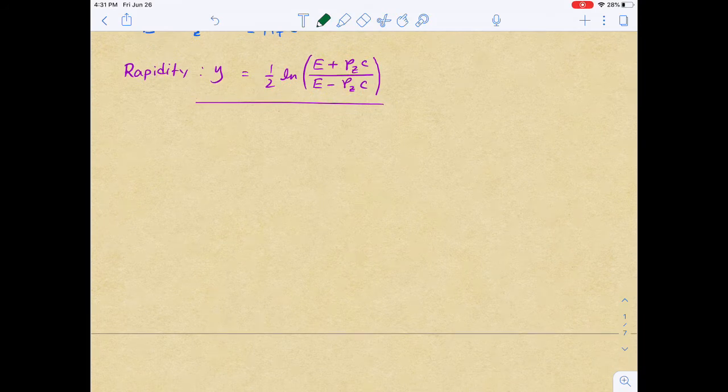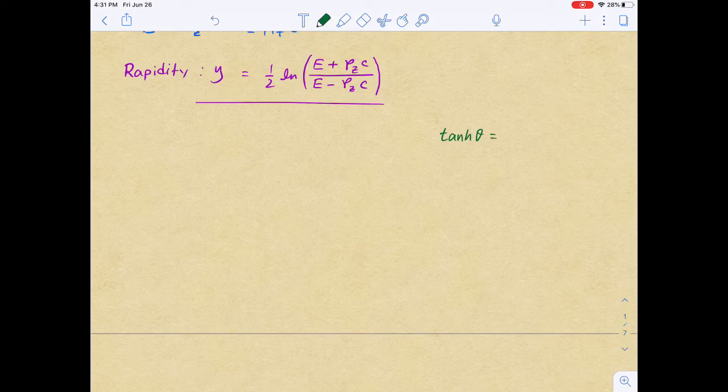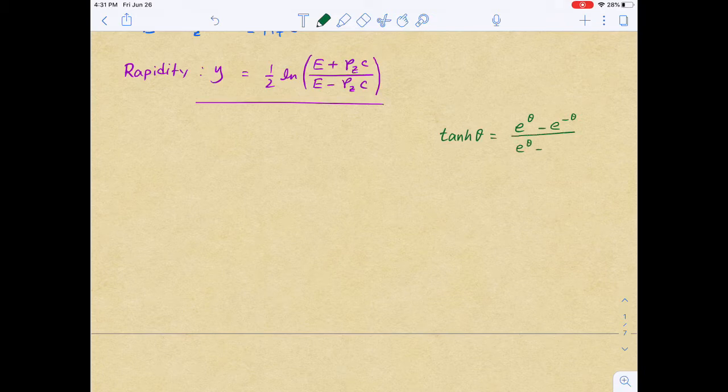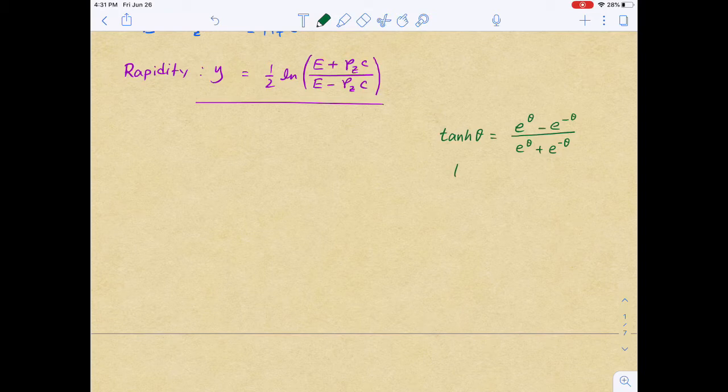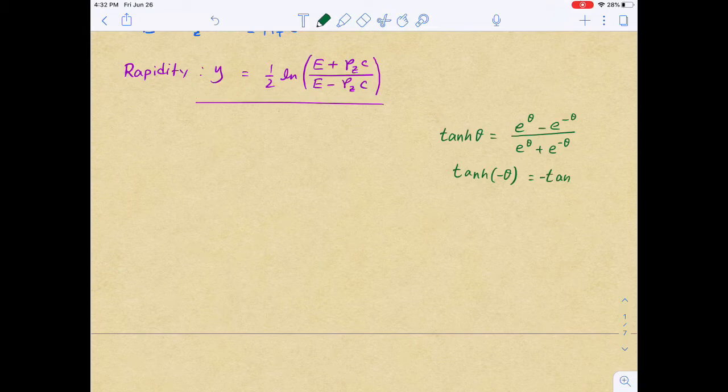So that is the rapidity. So we can use a few of the geometrical or trigonometrical identities. Hyperbolic tangent, or tanh, so tanh of theta is basically equals to e to the theta minus e to the minus theta divided by same thing, but added instead of subtracted.